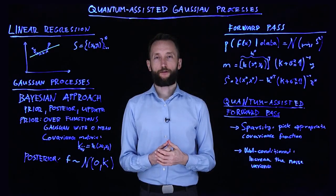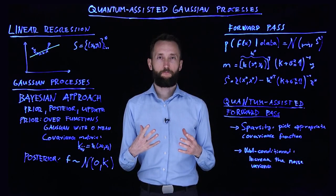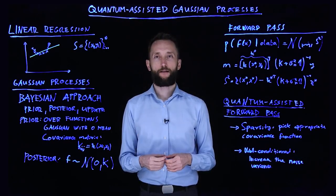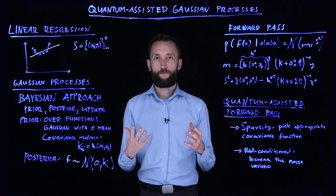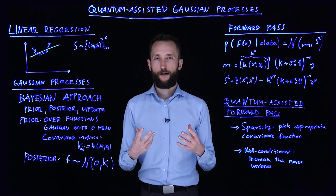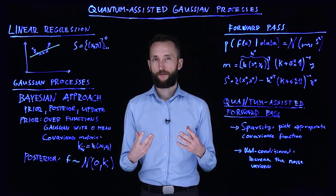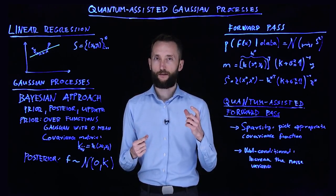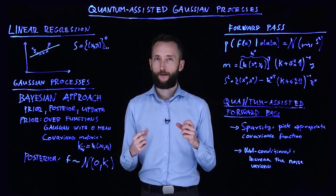We talked about quantum linear algebra and a couple of applications in machine learning, and I want to take a look at a very specific one, which is quantum-assisted Gaussian processes. It's a very good fit for the quantum matrix inversion algorithm because the conditions are fulfilled, so let's take a look at how it works.